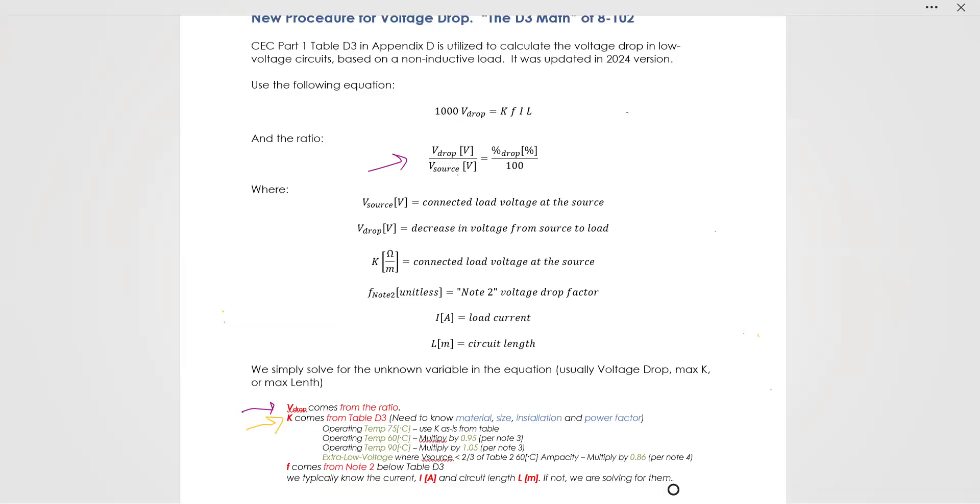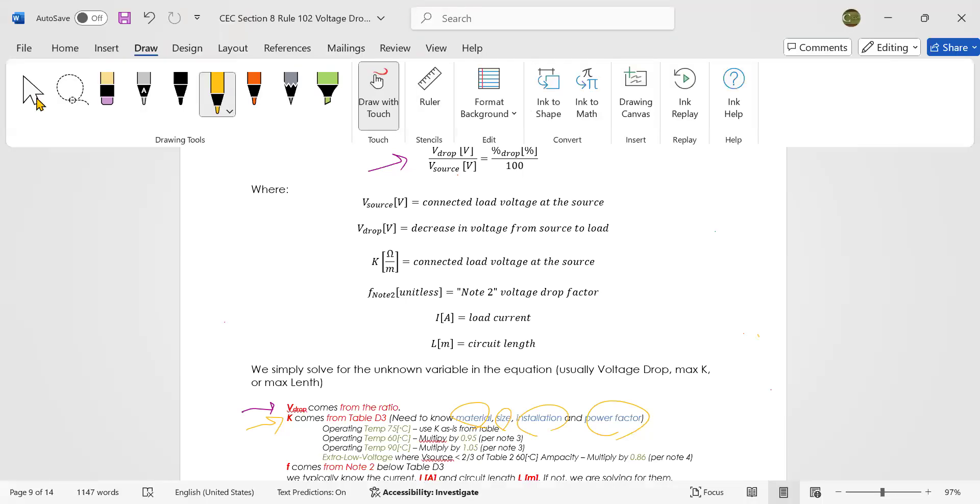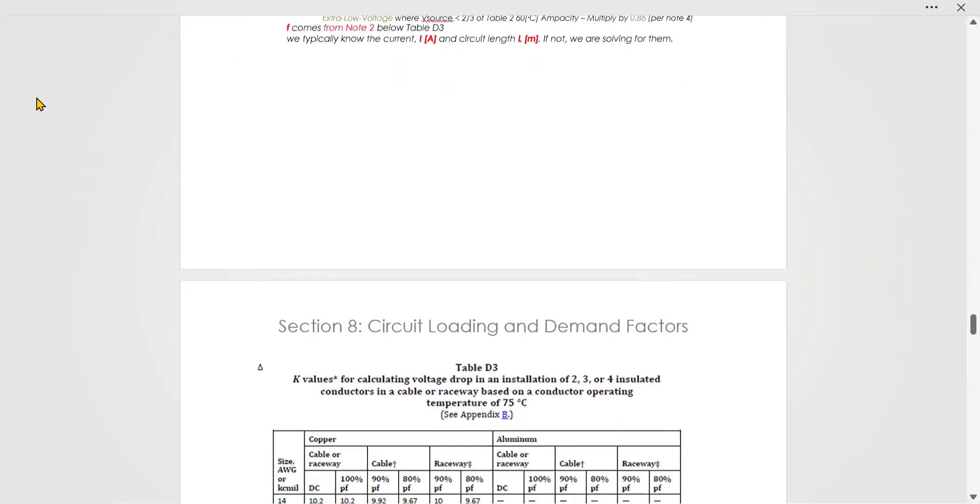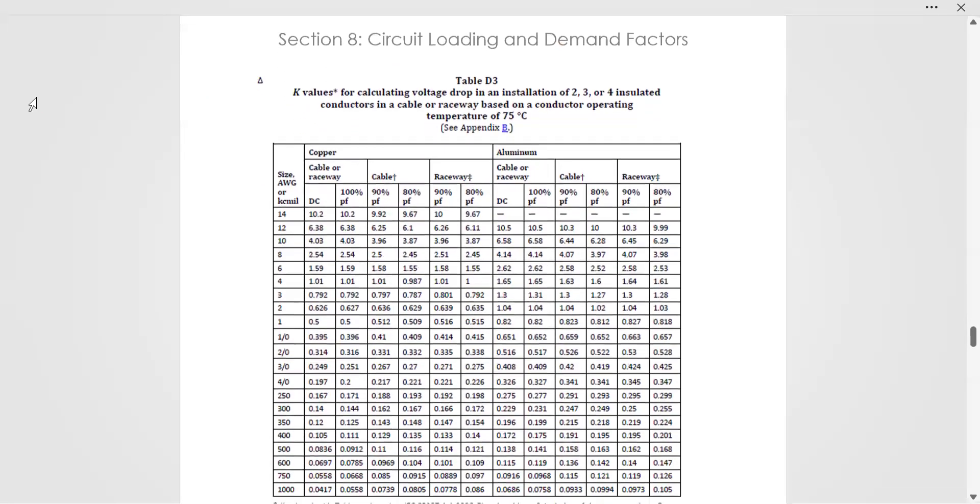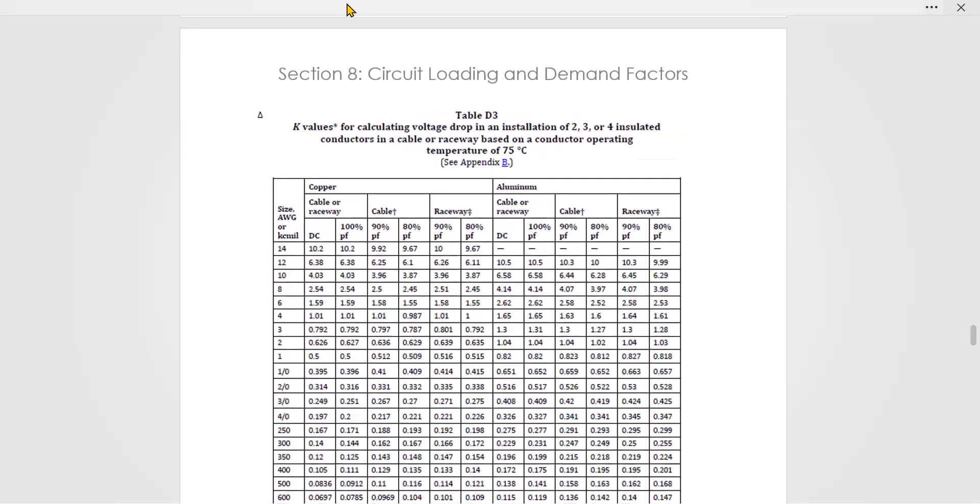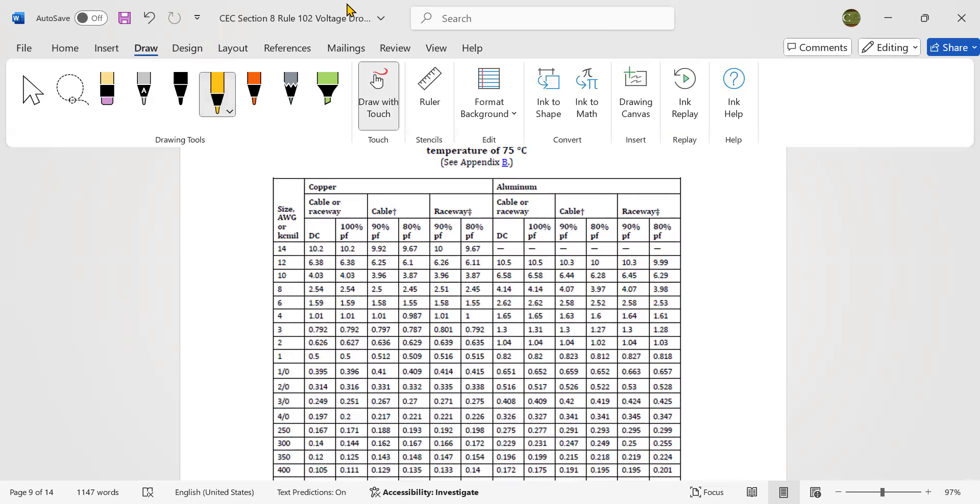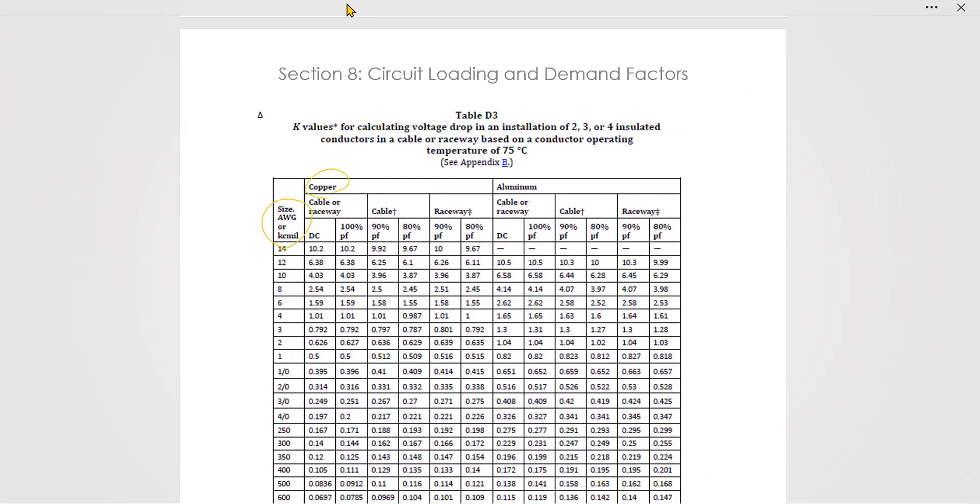K comes from table D3. In order to know K, we need to know the material, the size, the installation, and the power factor. Let me scroll down to table K and show you what I mean. We have to know the size, the material - copper or aluminum - the installation, and the power factor. That's all it is for table D3.